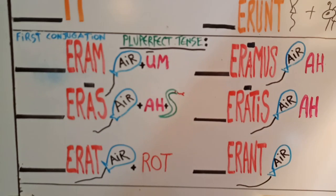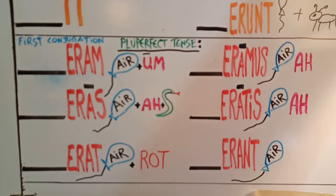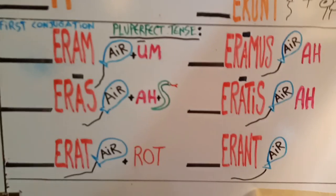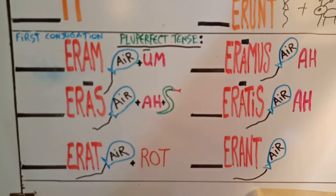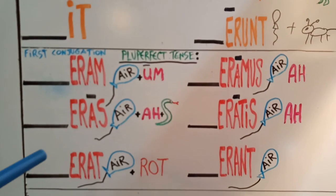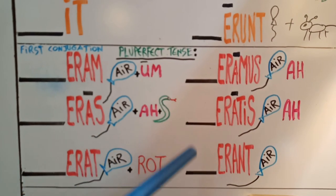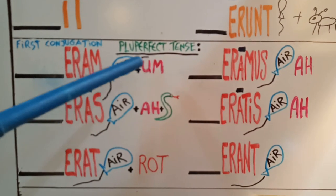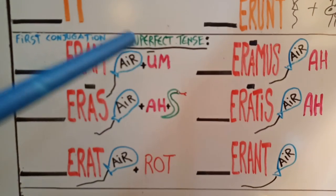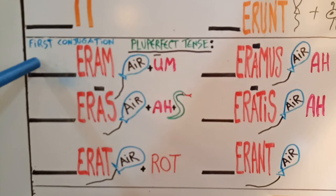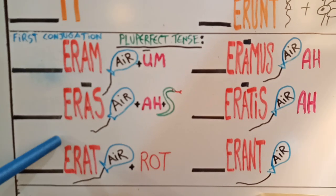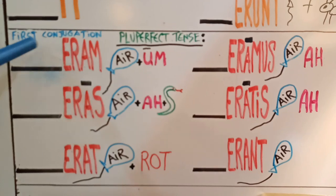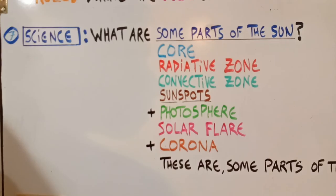For Latin, it's first conjugation, pluperfect tense. On a pluperfect day, we've got to breathe in that erum: eram, eras, erat, eramus, eratis, erant. First conjugation, pluperfect tense. Again — eram, eras, erat, eramus, eratis, erant. First conjugation, pluperfect tense.